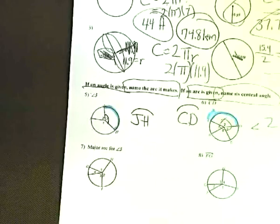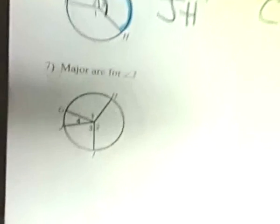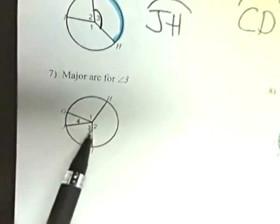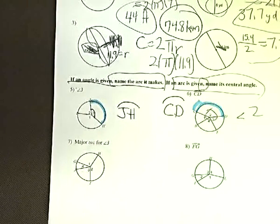On number 7, they want to know what the major arc is for number 3. Here's angle 3. They want to know what the major arc happens to be. So the first thing I have to talk about is exactly what does a major arc represent.